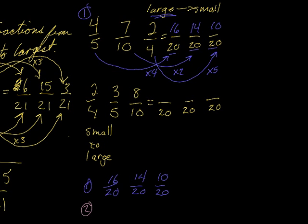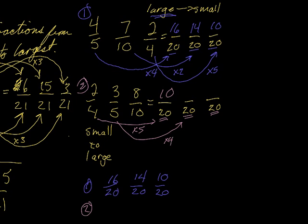For question 2, we again use 20 as the common denominator. What did we do to 4 to make it 20? Multiplied by 5 — so that's 10. What did we do to 5 to make it 20? Multiplied by 4 — so that's 12. What did we do to 10 to make it 20? Multiplied by 2 — so that's 16.